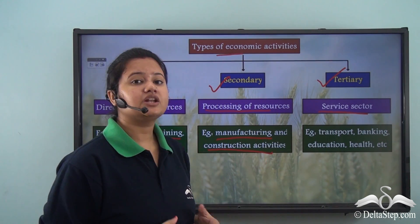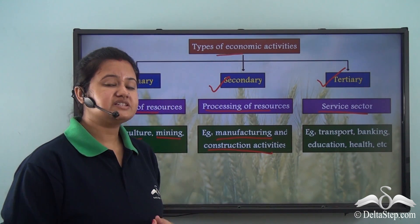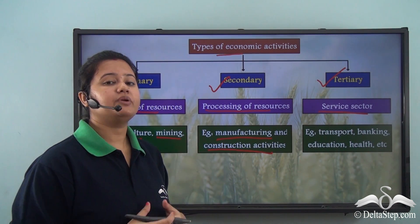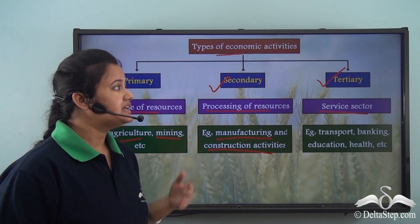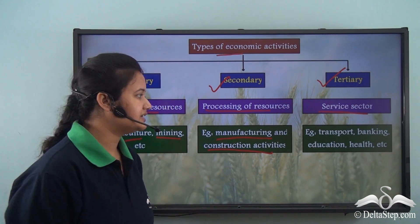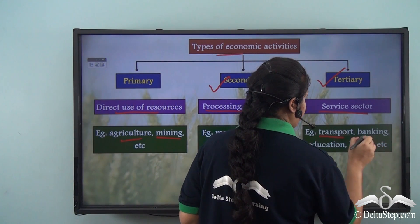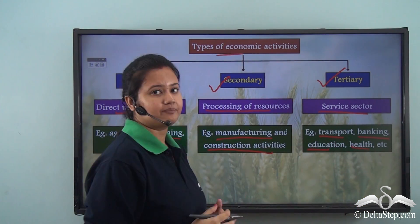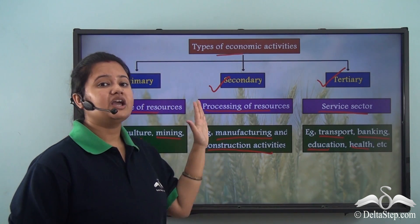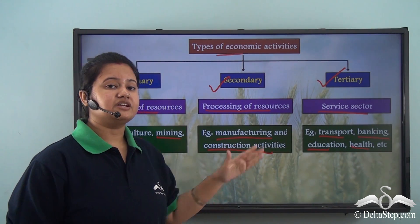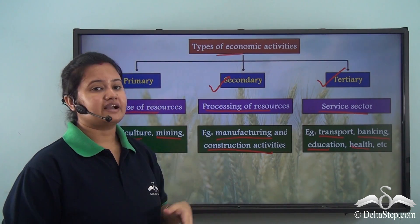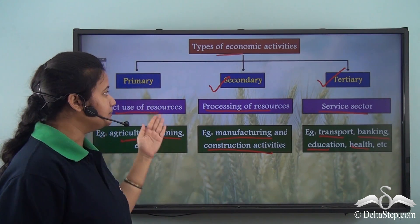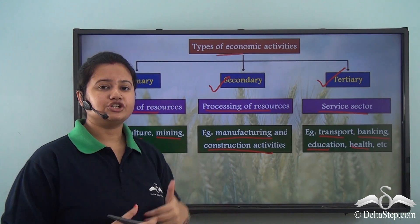Finally, we have the tertiary sector, which mostly includes the service sector. This includes activities that are required to support secondary and primary economic activities. Some examples of tertiary sectors are transport, banking, education, and health. So these are the three categories of economic activities: primary, secondary, and tertiary.